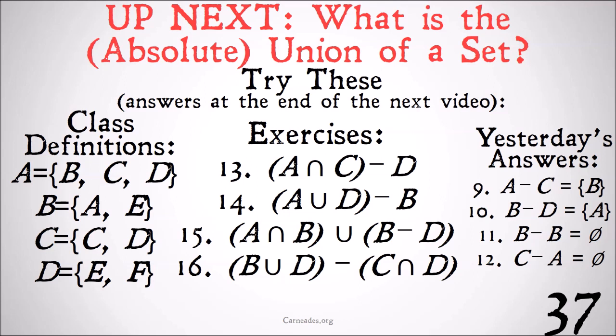The difference between B and D is just A, because the only thing that B and D share is E, so we pull out the E from B and we're left with A. The difference between B and itself is just the null set, because there are no members left once we pull all the members out of B. And similarly, the difference between C and A is going to be the null set, because since C is a subclass of A, when we take all the members of A, which are also in C, out of C, there's nothing left in C, so it's just the null set with no members.